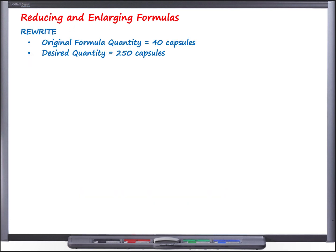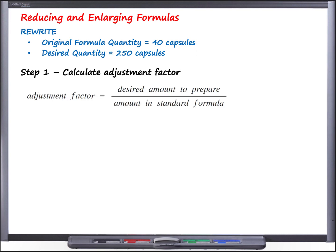The first step is to calculate an adjustment factor, which is the key for all these questions. The adjustment factor is simply equal to taking the desired amount that we want to prepare and dividing it by the amount actually stated in the formula. So the desired amount goes on top, this is what we want to prepare, and we divide it by the amount specified in the formula. For this question, we want to prepare a batch containing 250 capsules, but our formula is based on the preparation of 40 capsules. So if we take 250 and divide it by 40, we see that our adjustment factor is equal to 6.25, essentially saying that we desire to make 6.25 times the amount specified in the original formula.